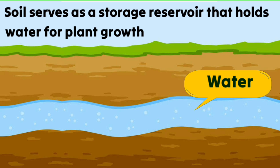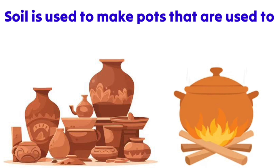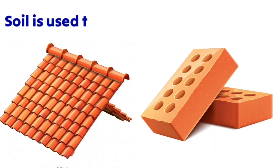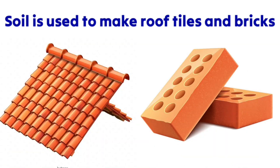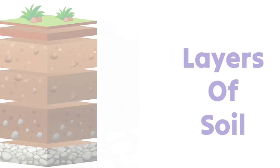Soil stores two-thirds of all fresh water on earth, making it the largest terrestrial water reservoir. It serves as a storage reservoir that holds water for plant growth. Soil is also used to make pots for cooking food and storing water.